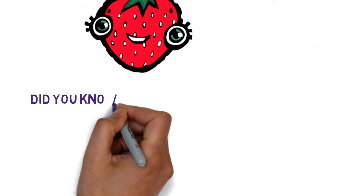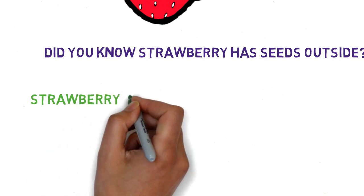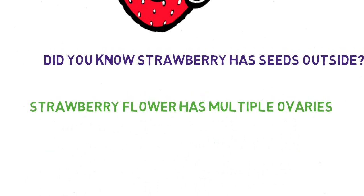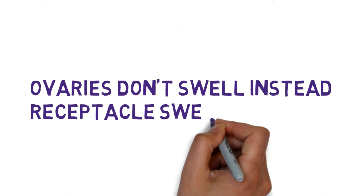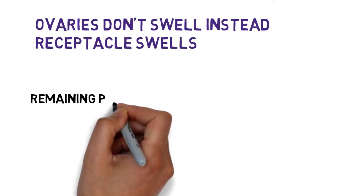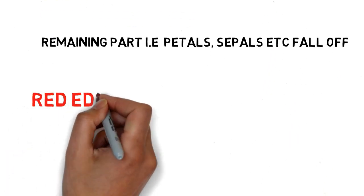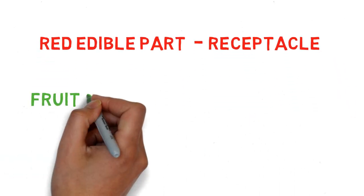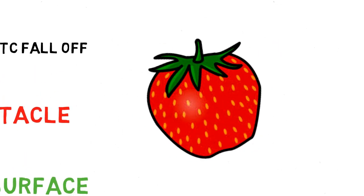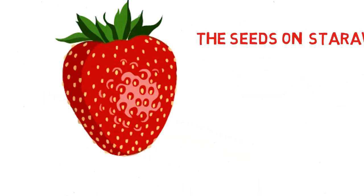Do you know that the strawberry fruit has seeds on the outside of its surface? But do you know why? It's because the strawberry flower has multiple ovaries. However, in the case of strawberry, the ovaries don't swell. Instead, it's the receptacle that swells to form the fruit, and the remaining parts of the flower — the petals, sepals, etc. — fall off. That means the red, tasty, edible part of strawberry that we eat is actually the receptacle, and the fruits are embedded on its surface. That means the seeds on the surface of the strawberry are actually tiny fruits, each carrying a seed.